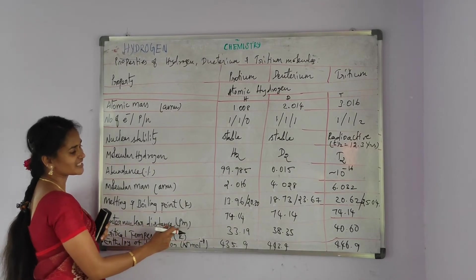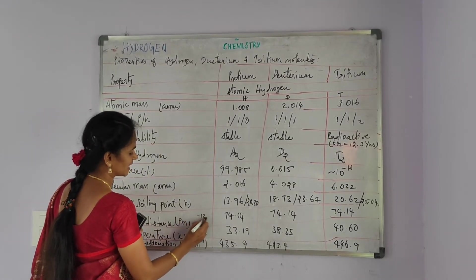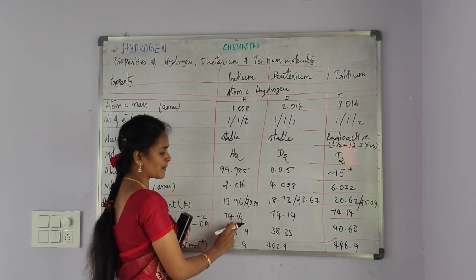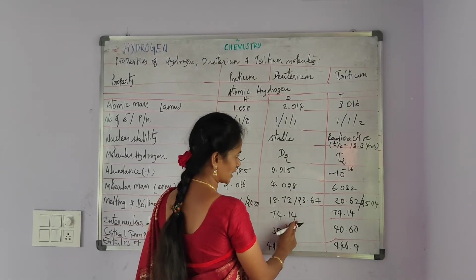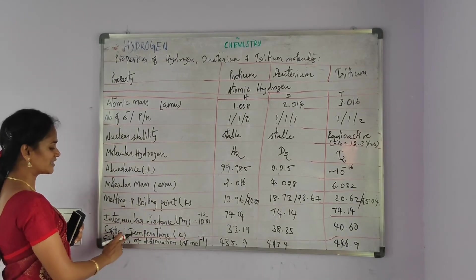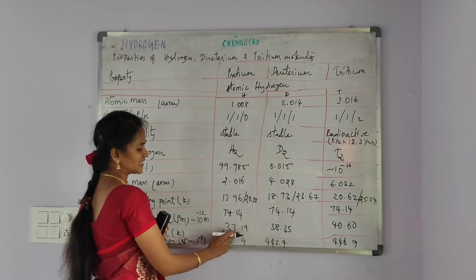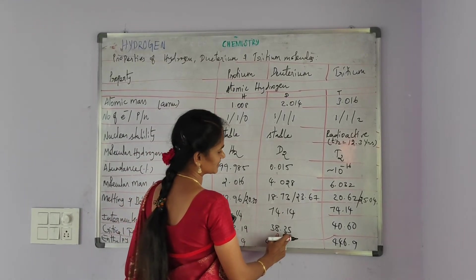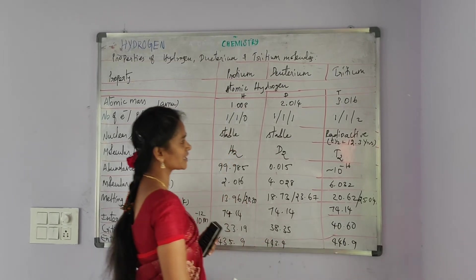Internuclear distance in picometers (where 1 pm = 10⁻¹² m): all three isotopes — protium, deuterium, and tritium — have 74.14 pm. Critical temperature in Kelvin: protium 33.19, deuterium 38.35, tritium 40.60.